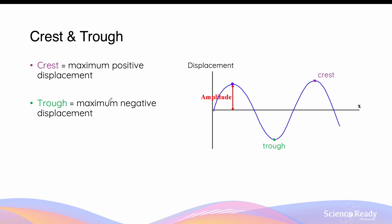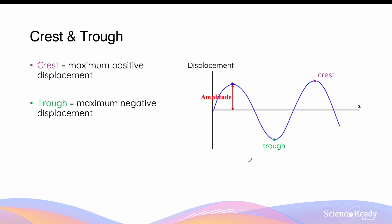When discussing the concept of amplitude, it is important to also understand two key terms in transverse waves. The crest of a transverse wave refers to the maximum positive displacement of the wave, represented by the purple dots on this diagram. In contrast, the trough of a transverse wave refers to the maximum negative displacement of the wave — the bottom end of the transverse wave on the diagram. The amplitude can be easily measured by finding the distance between the centre or equilibrium position of the wave and the crest or the trough.